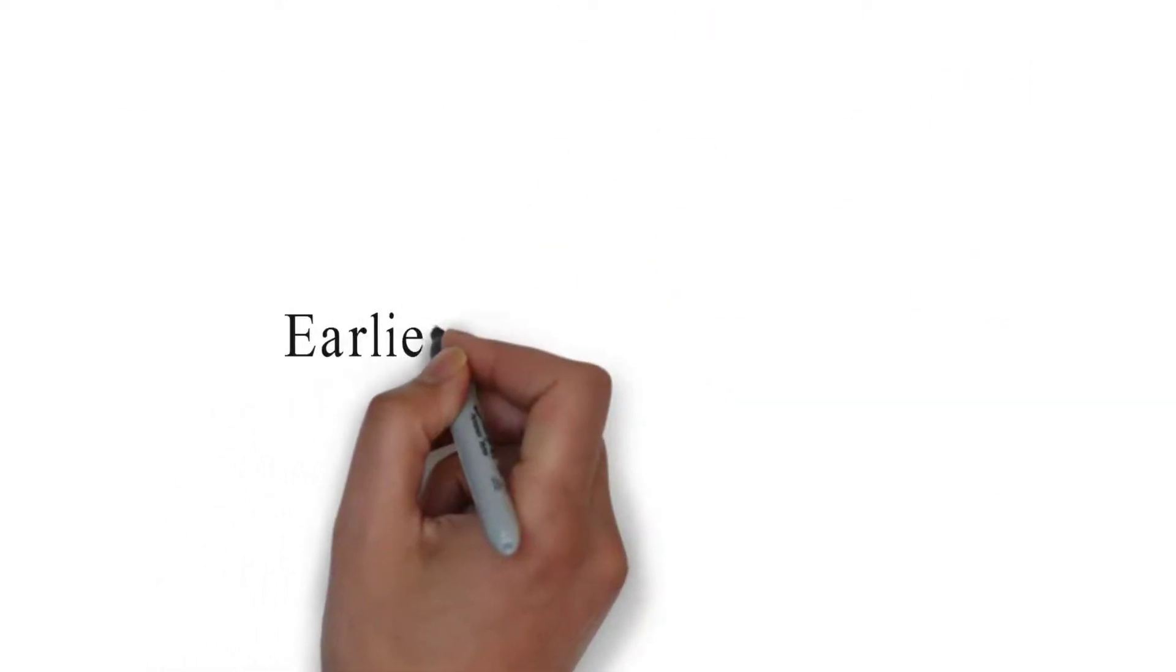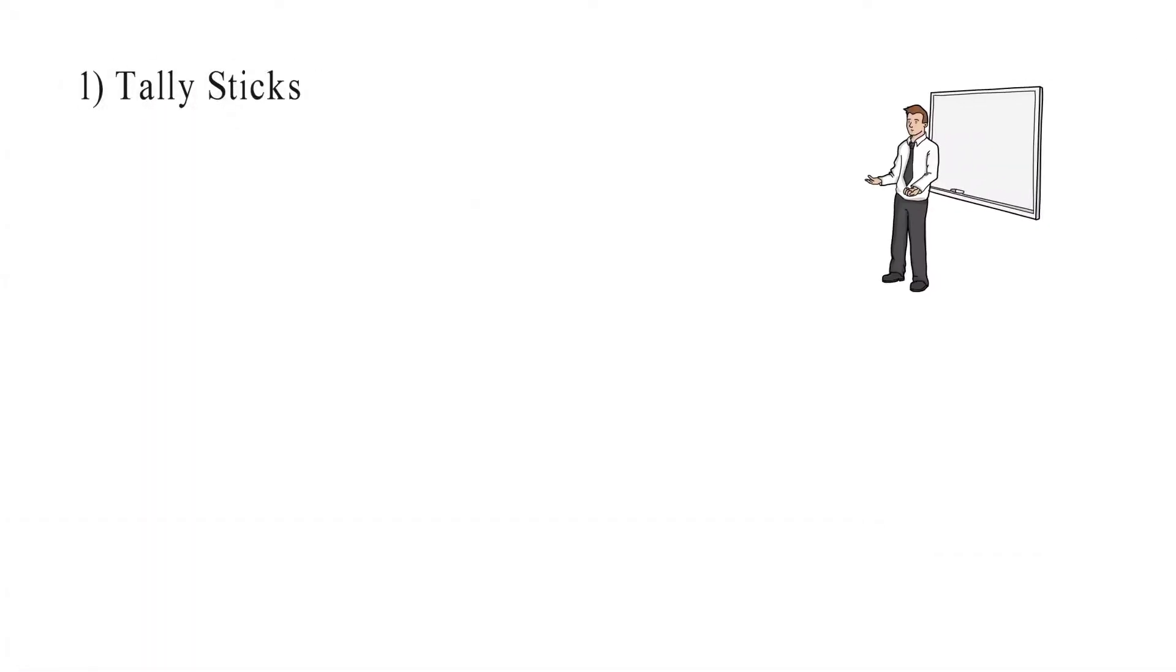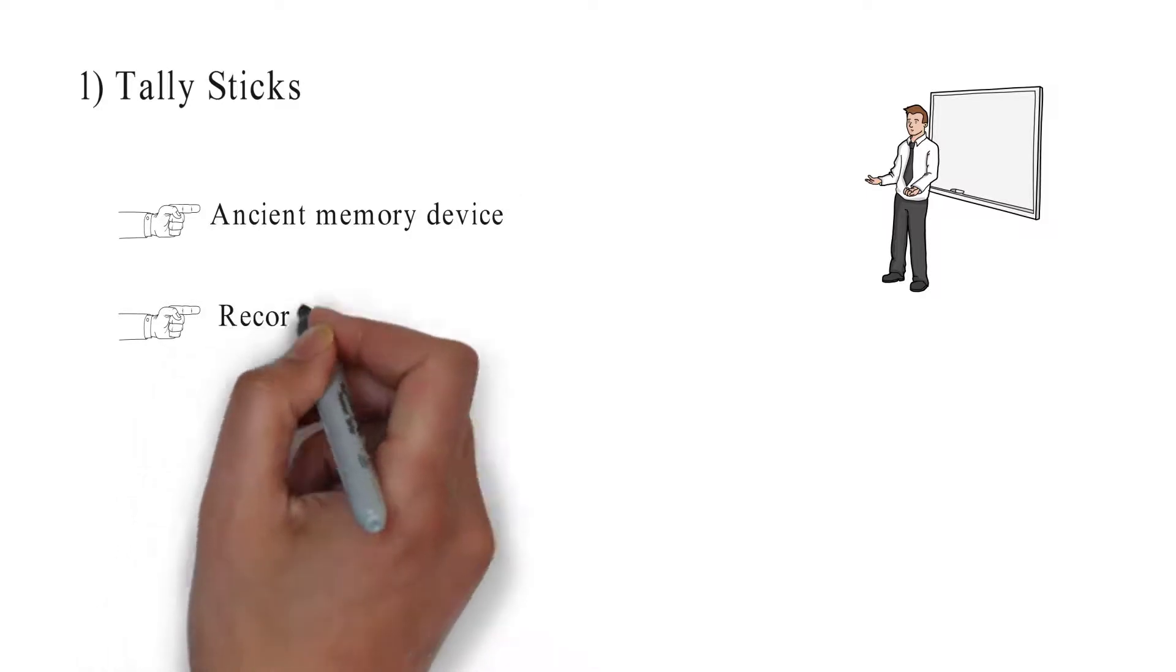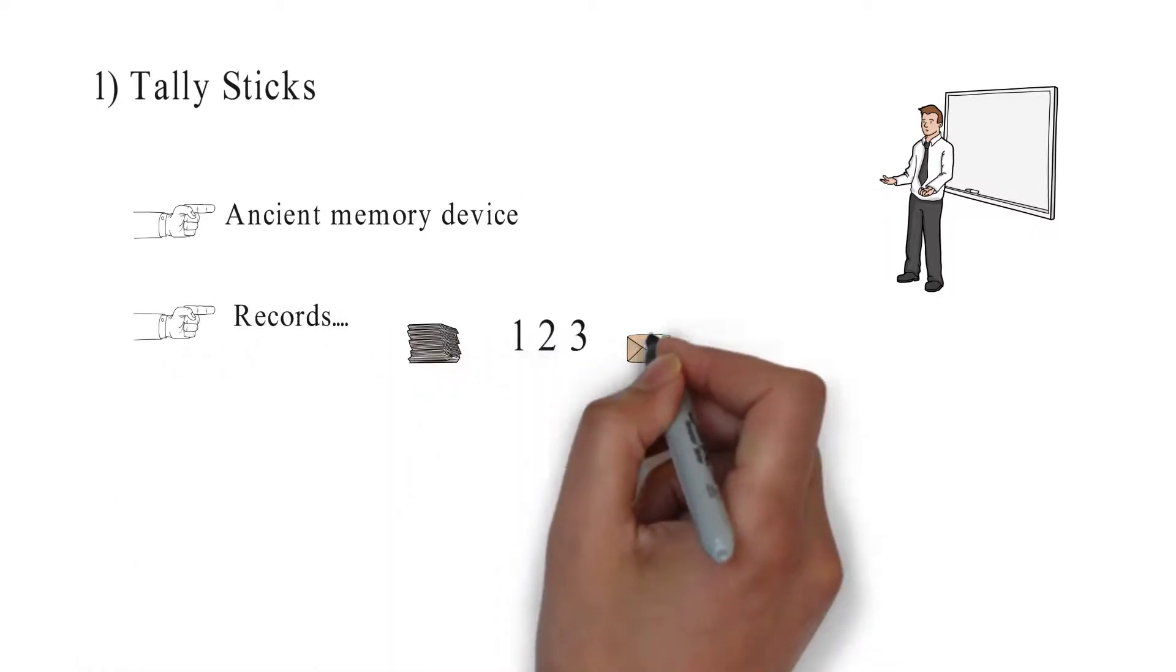Let's discuss some earliest computer devices which were used for mathematics. Number 1: Tally sticks. A tally stick was an ancient memory device used to record documents, numbers, or messages.